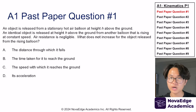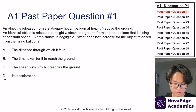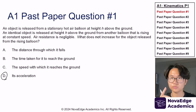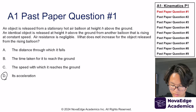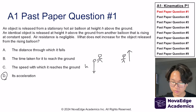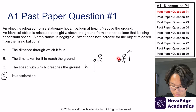Let's try topic A1, past paper question 1. If you chose D, then you are absolutely right. We have two balls being released from two different balloons. One balloon is just releasing it from a certain height. The other balloon is actually moving up, which means the trajectory of the ball will not be a straight drop, but rather go upward first.